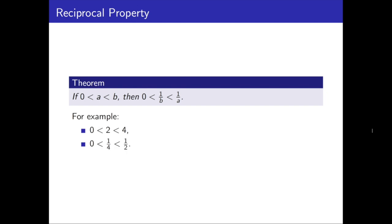So for an example of what I mean, we have 2 and 4, these are positive integers, 2 is less than 4, but when you take the reciprocal, you find that a quarter is less than a half. So when we take the reciprocal, we switch the direction of the inequality, as long as both numbers are actually positive.